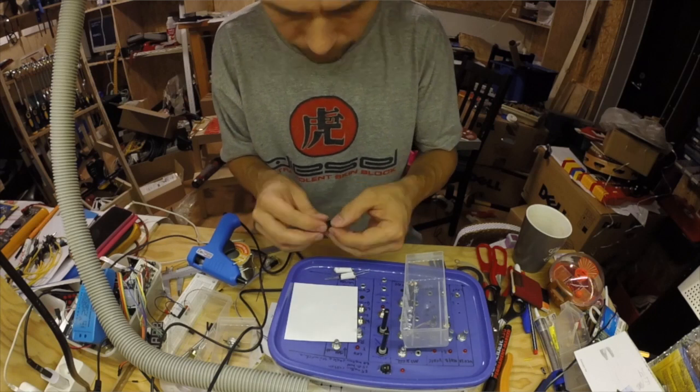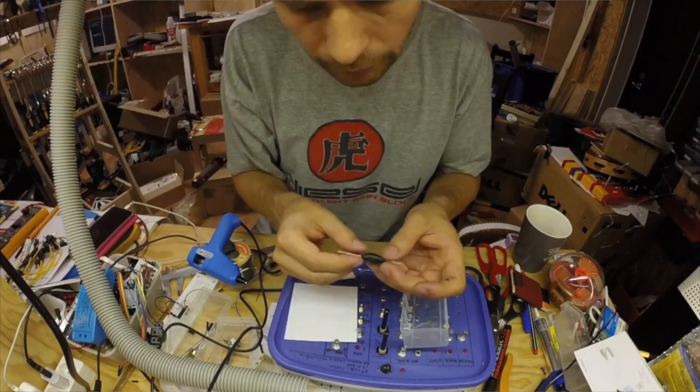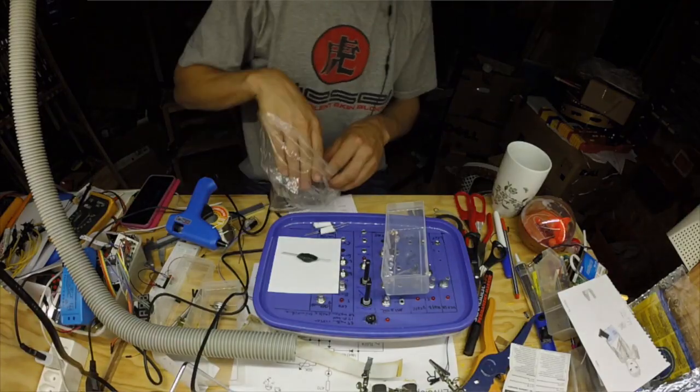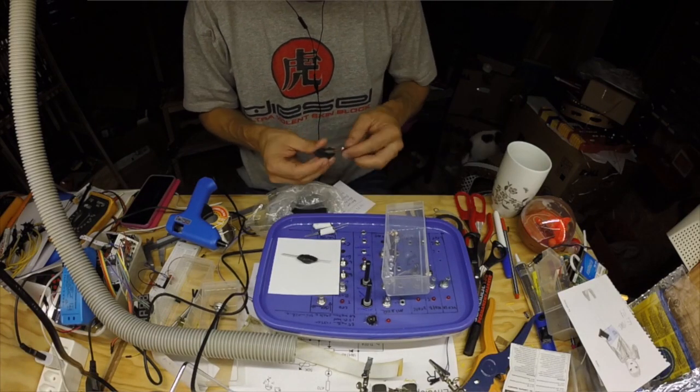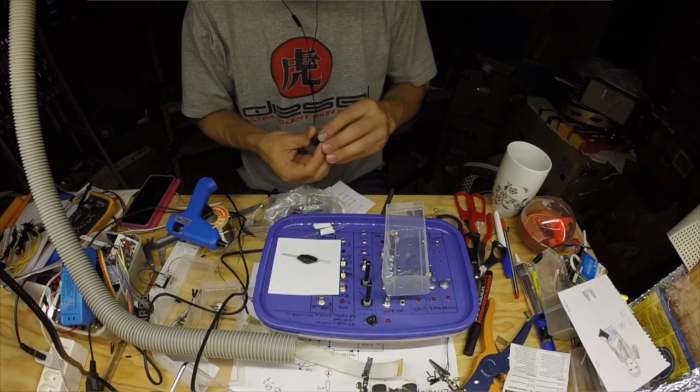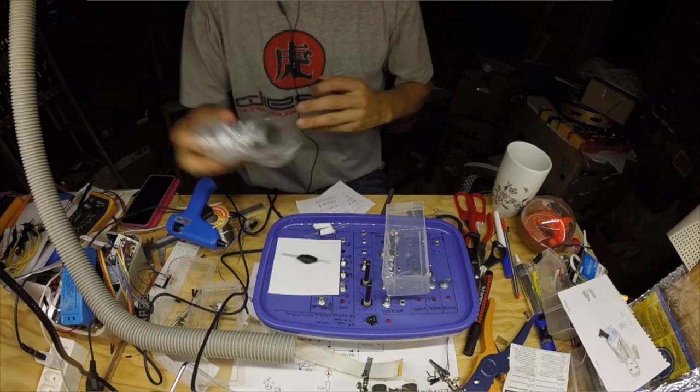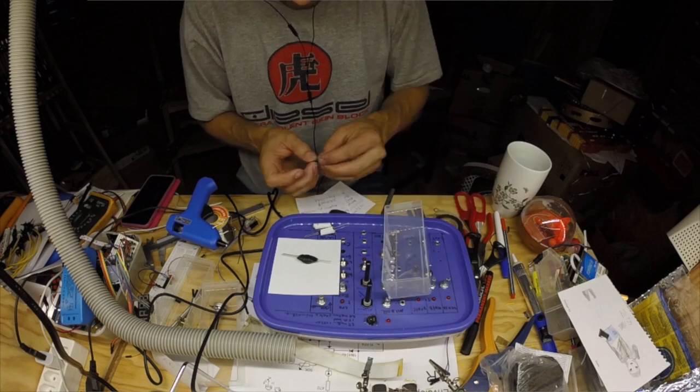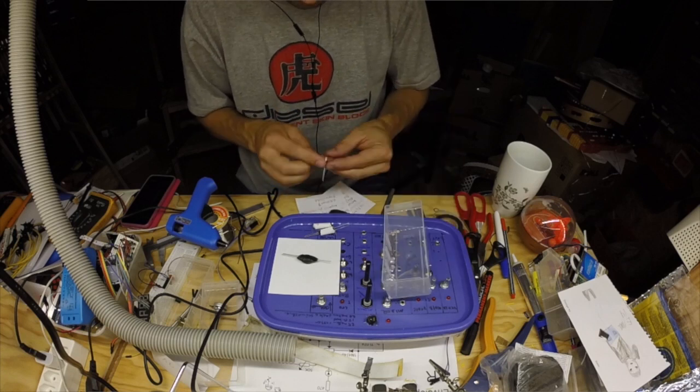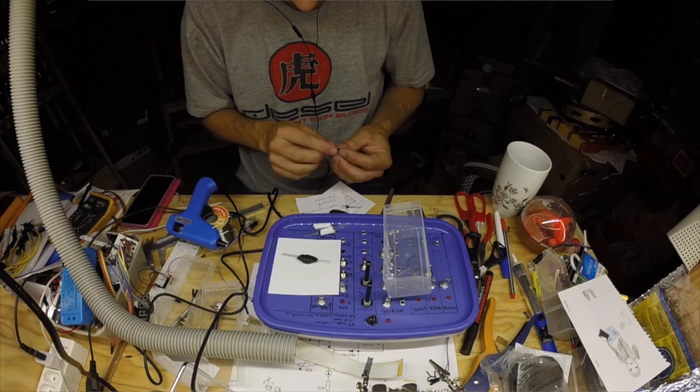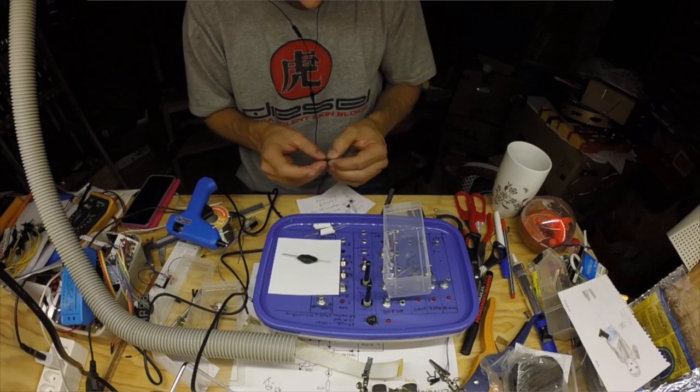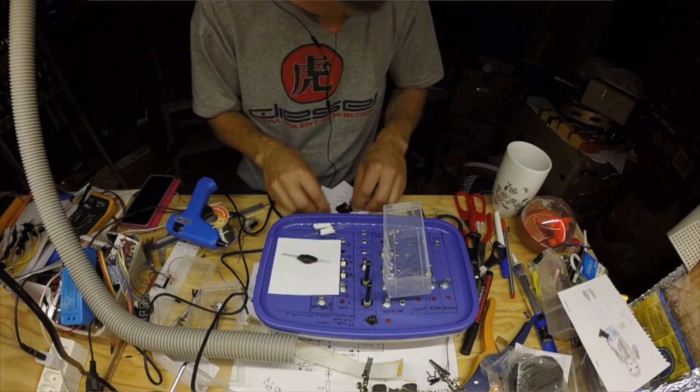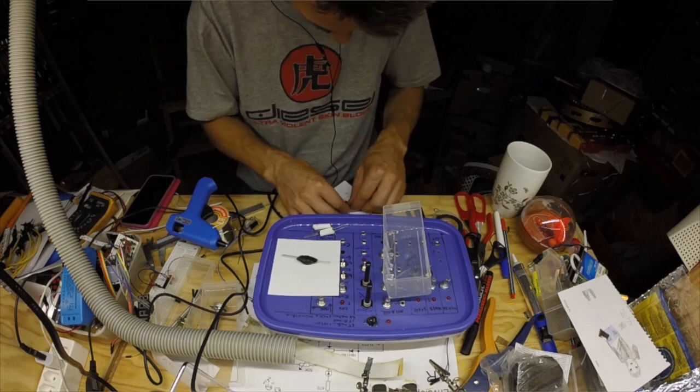So in the end I got out my Fimo clay or Cernit clay, and that worked really well. I made a small dish and then rolled the LED and LDR into them, and then I baked them in the oven, and that worked really great. It doesn't seem that any light gets in, and they work a treat. Fimo clay is really cheap to find, and I would really recommend this method if you want to make a few VACTROLs on your own.